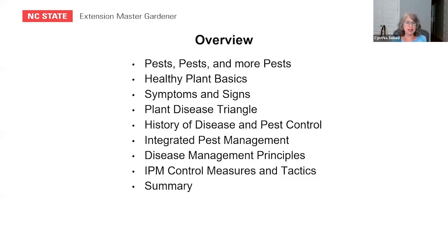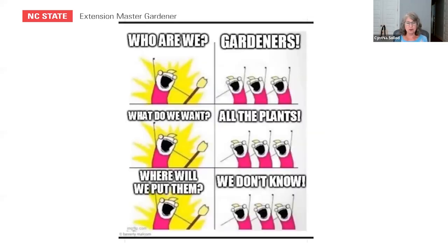What we'll talk about today is different kinds of pests, pests and more pests — there's plenty out there. A little bit about healthy plant basics, symptoms and signs of diseases, the plant disease triangle, which is a concept in plant pathology, a little bit about the history of disease and pest control, integrated pest management, disease management principles, IPM control measures and tactics, a brief summary, and I'll give you some information at the end.